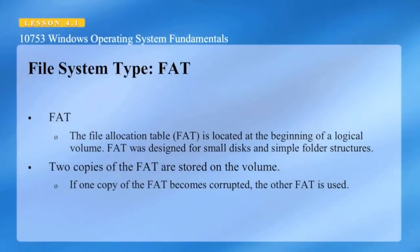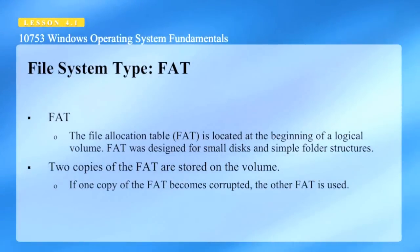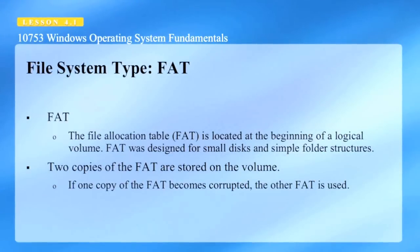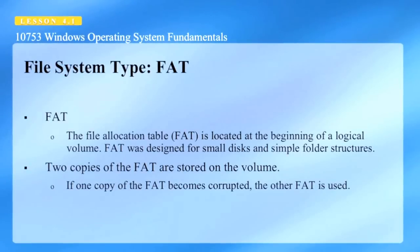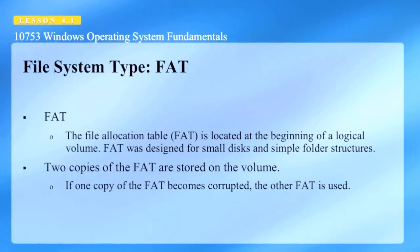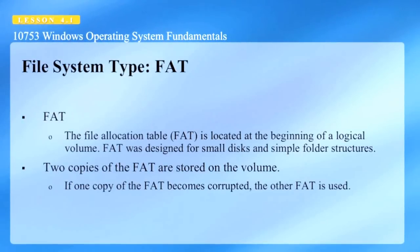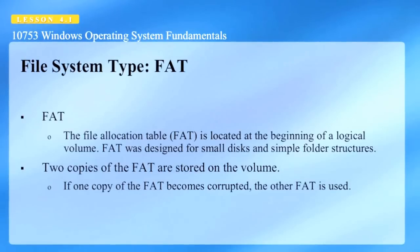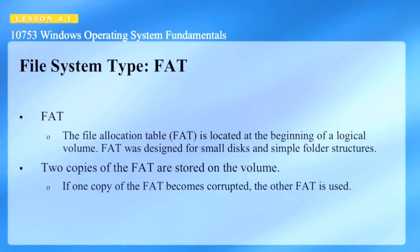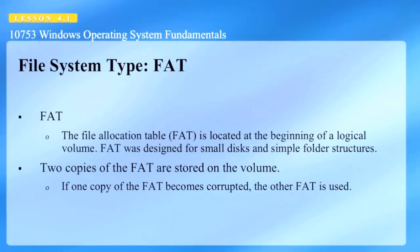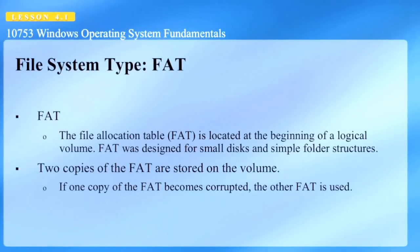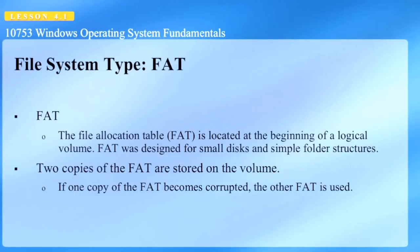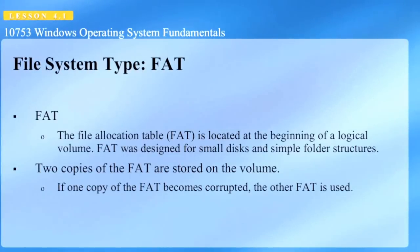The first file system to look at is FAT. The file location table is located at the beginning of a logical volume. FAT was designed for small disks and simple folder structures. There are two copies of the file allocation table stored on a volume — it keeps track of where all your files are. If one copy becomes corrupted, the other file allocation table is used.